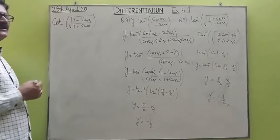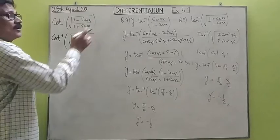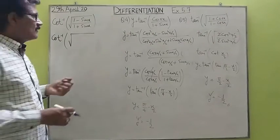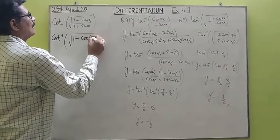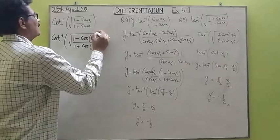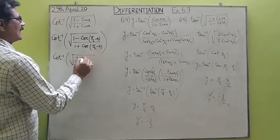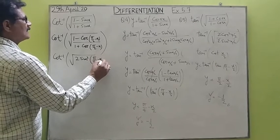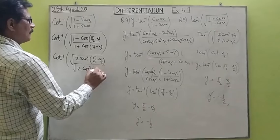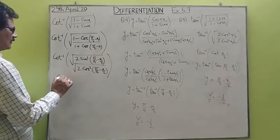The last question is cot inverse of root((1 minus sin x)/(1 plus sin x)). With 1, it is better to have the cos function, so we use complementary conversion and write this as 1 minus cos(π/2 minus x) upon 1 plus cos(π/2 minus x). Using the half-angle formula we get cot inverse of root of 2 sin squared(π/4 minus x/2) over root of 2 cos squared(π/4 minus x/2), simplifying to cot inverse of tan(π/4 minus x/2).